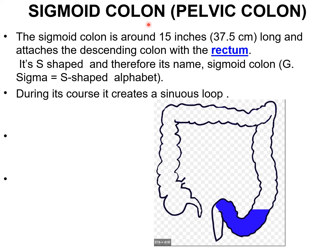About the sigmoid colon — it is also called the pelvic colon, around 15 inches (37.5 cm) long, connecting the descending colon with the rectum. It is named the sigmoid colon because it has the shape of an S — sigma means S-shaped. During its course it creates a sinuous loop.